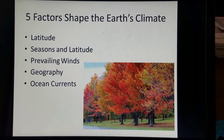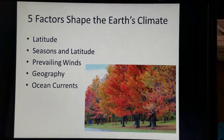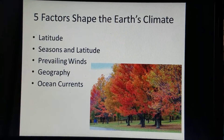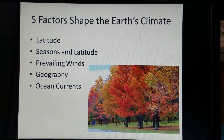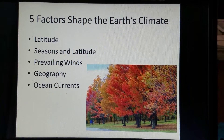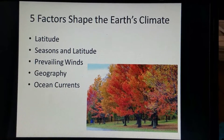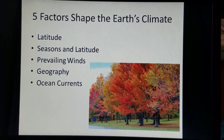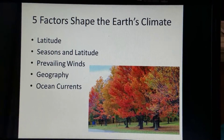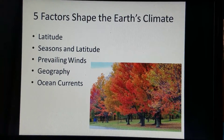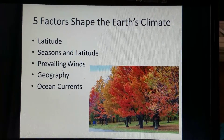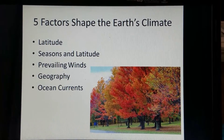There are five factors that really shape the Earth's climate, and this is what we're going to delve into on today's Spot on Weather lesson. We're going to take a look at latitude, the seasons and latitude and how they tie in together, the prevailing winds, the geography of an area, and then ocean currents. These are really the five major factors which shape the Earth's climate for a certain area on the globe.